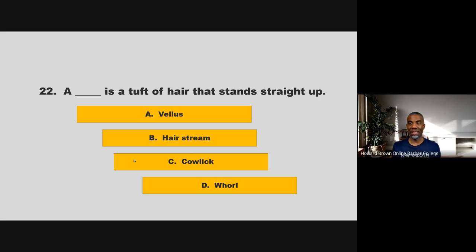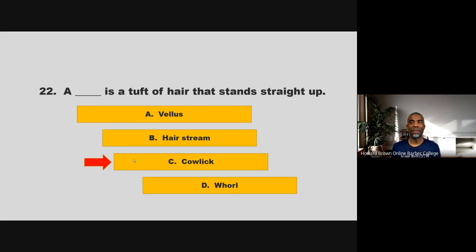A blank is a tuft of hair that stands straight up. Is it vellus, hairstream, cowlick, or whirl? If you chose C, cowlick, you are correct.